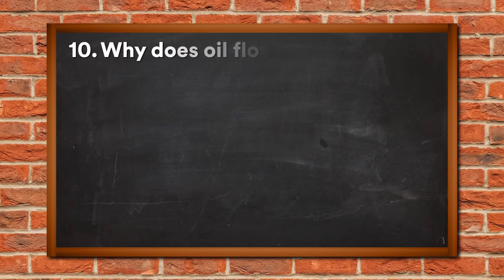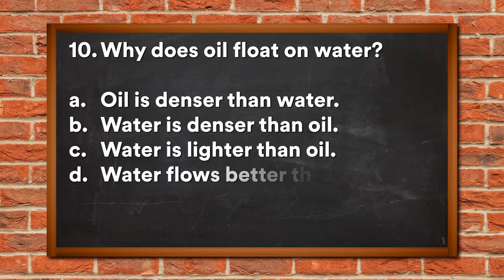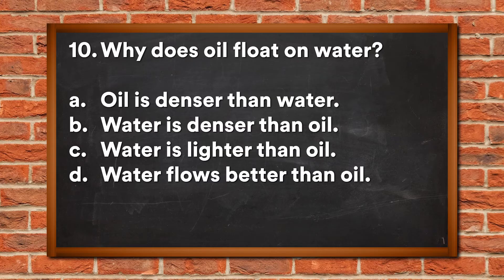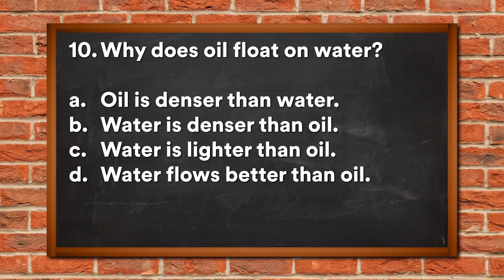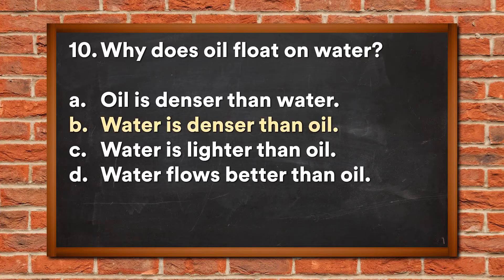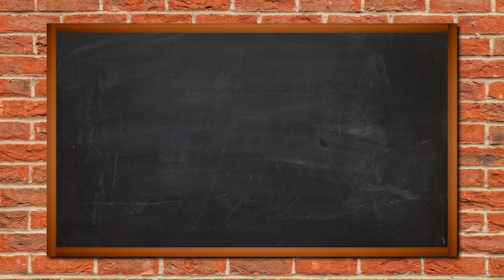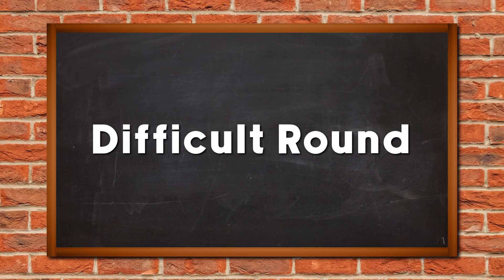Question 10: Why does oil float on water? A. Oil is denser than water, B. Water is denser than oil, C. Water is lighter than oil, D. Water flows better than oil. The answer is B, Water is denser than oil. It's time for us to proceed to the difficult round.